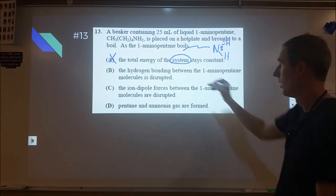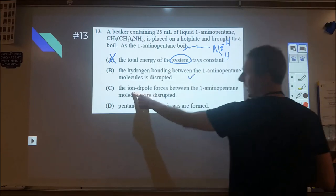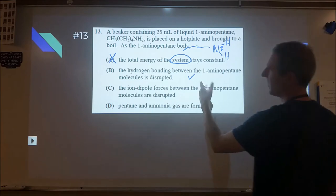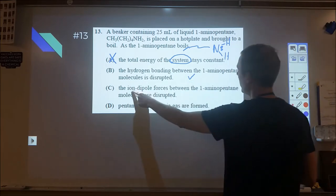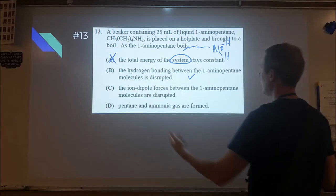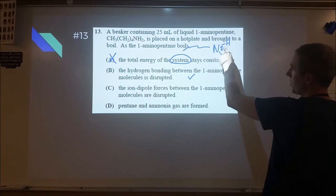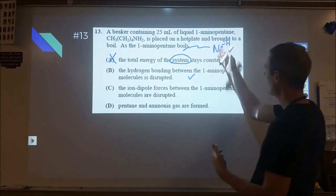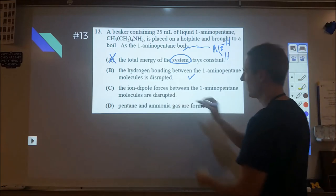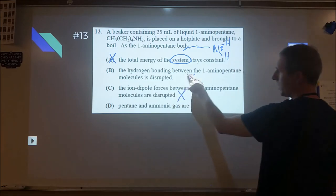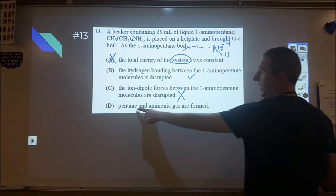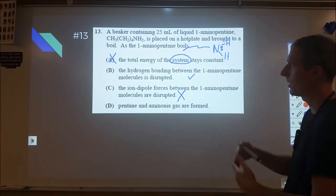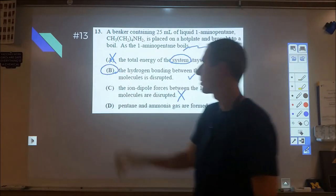Ion-dipole forces between the 1-aminopentane molecules are disrupted? If it's pure, that's not going to be the case because we're probably not going to have many ions. That would involve an acid-base reaction where an H+ transfers from one to the other, but that would produce a negative charge on nitrogen, which is not very stable. So this doesn't look like a very good answer to me. Pentane and ammonia gas are formed? We're not looking at a chemical decomposition, we're just looking at boiling. So therefore we go back and we pick B as our best choice.